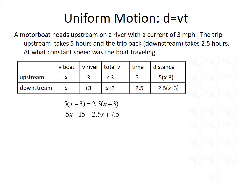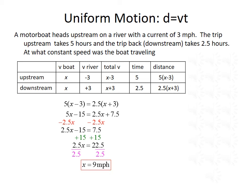We want to solve this for X, so we'll start by removing parentheses. We distribute the five on the left-hand side to give us 5X minus 15, and distribute the 2.5 on the right-hand side to get 2.5X plus 7.5. We'll subtract 2.5X from both sides, which gives us 2.5X minus 15 equals 7.5. We add 15 to both sides, so 2.5X equals 22.5. Finally, we divide both sides by 2.5, and that gives us X equals 9 miles per hour.